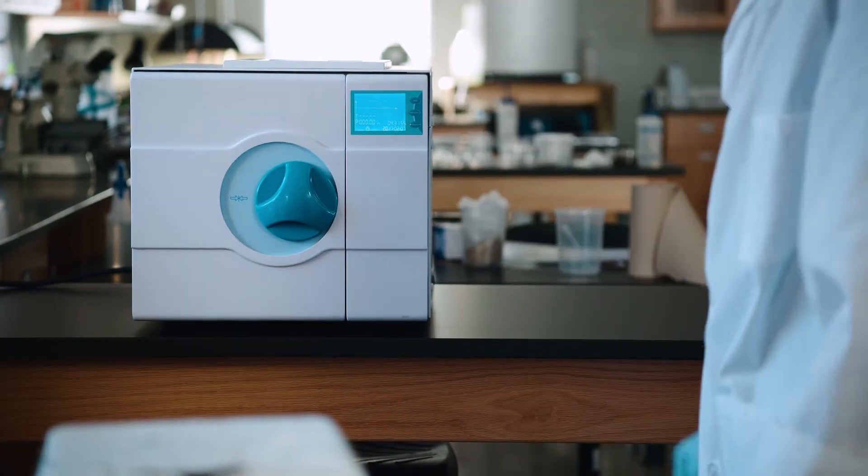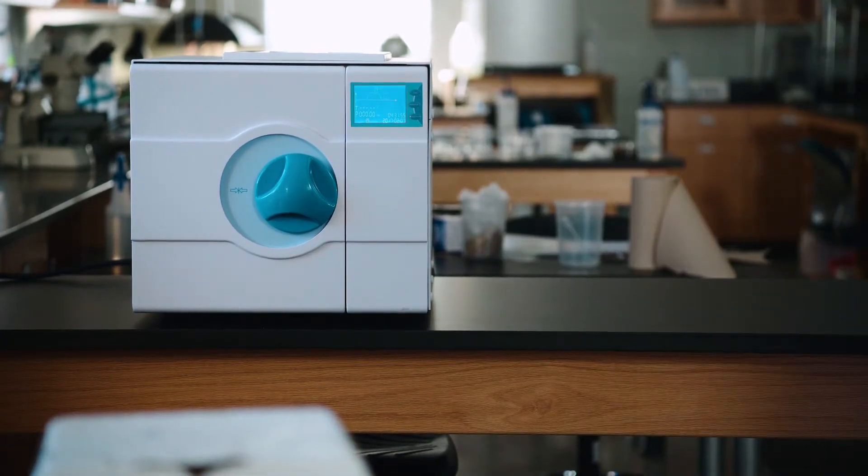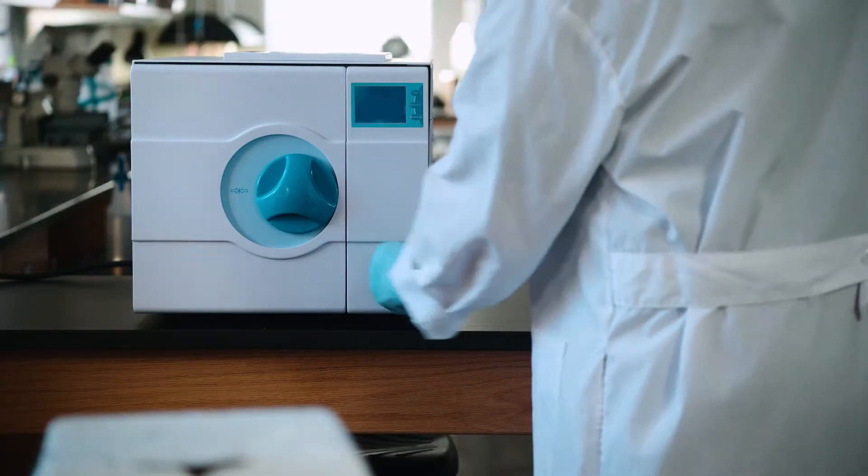Once the autoclave has completed its cycle, remove the now sterile media and allow it to cool to 45 to 50 degrees Celsius before pouring plates.